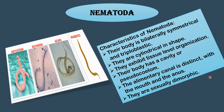Animals belonging to Nematoda have a long, thin and cylindrical unsegmented body which tapers at both ends. They are thus also called round worms. Round worms are mostly parasites that live inside the digestive tract of human beings and herbivorous animals. Some also live in the soil or water. They have a tube-like digestive system with a mouth at one end and an anus at the other end. Ascaris and hookworms are nematodes.